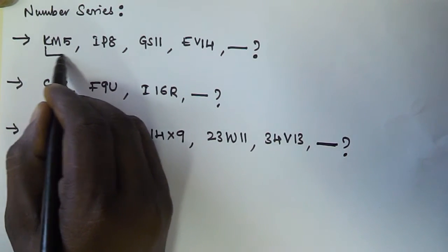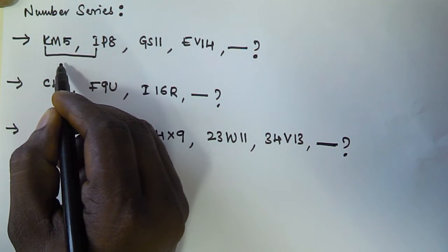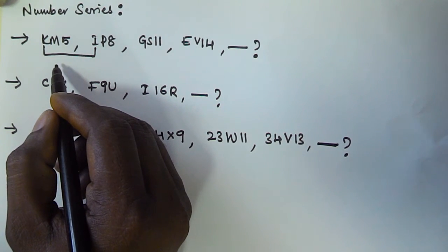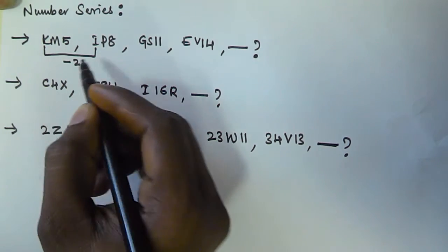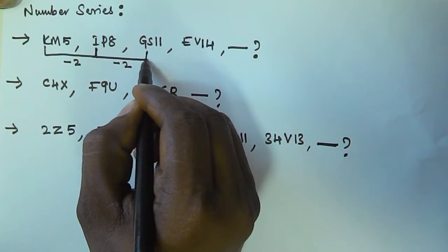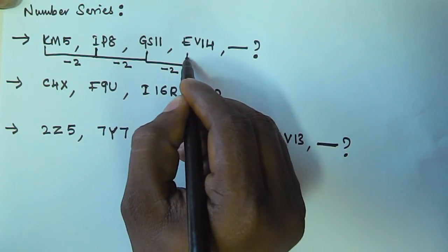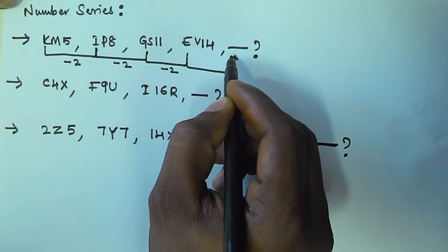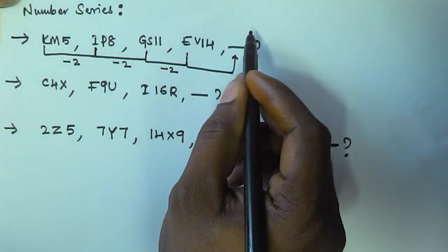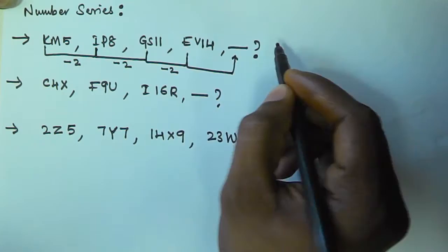Looking at Problem 1, the difference from K to I: I, J, K — that is two steps backward, so minus two in the first letter. From I to G: G, H, I — again two steps backward. From G to E: E, F, G — also two steps backward. So the next first letter will also be two steps backward from E.